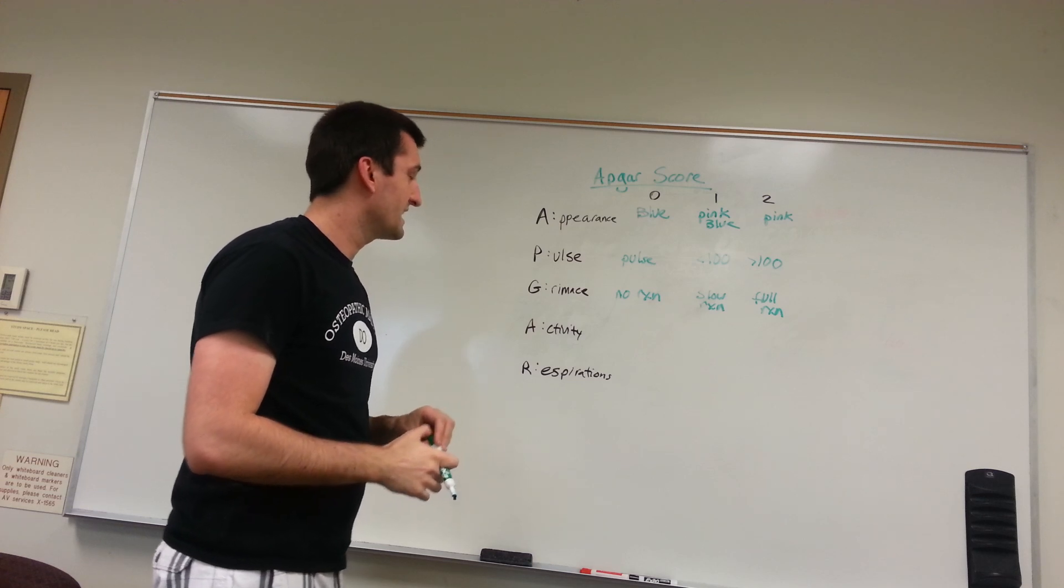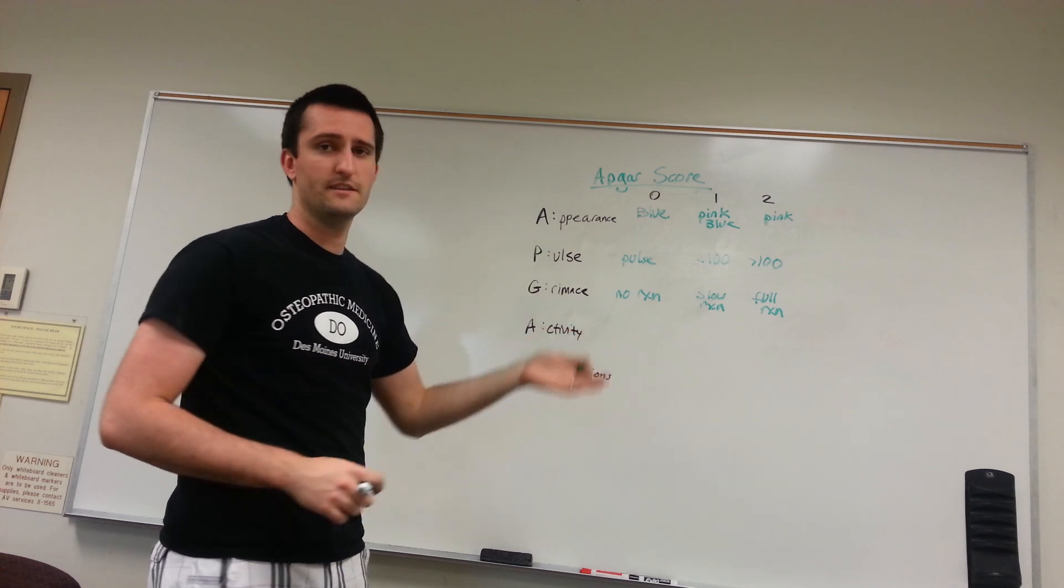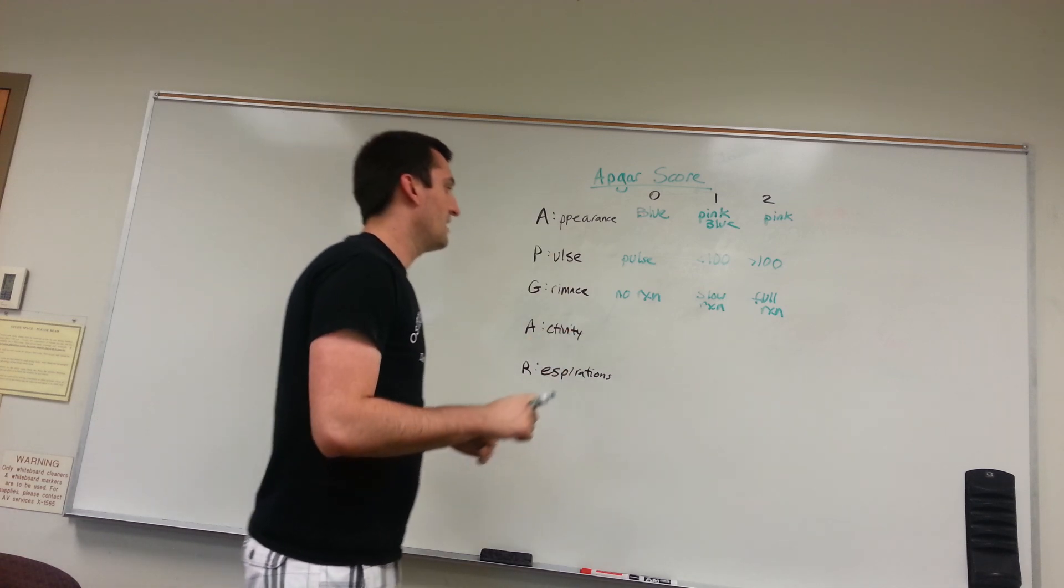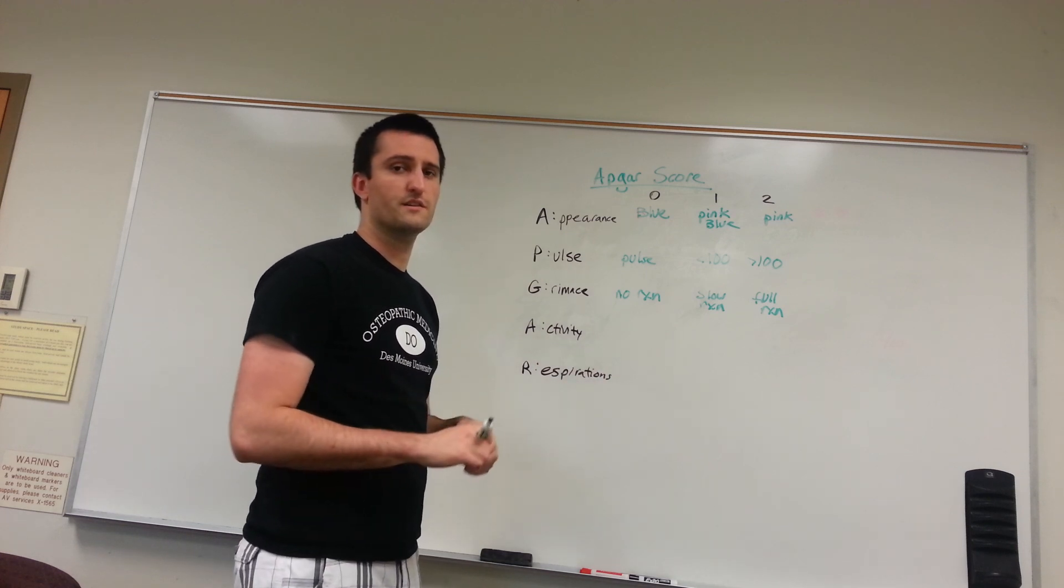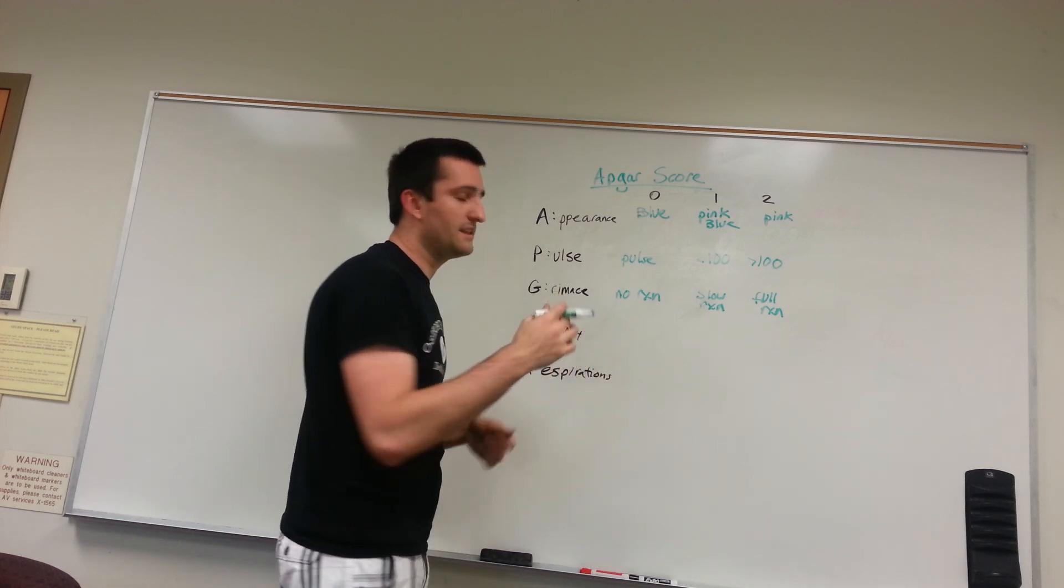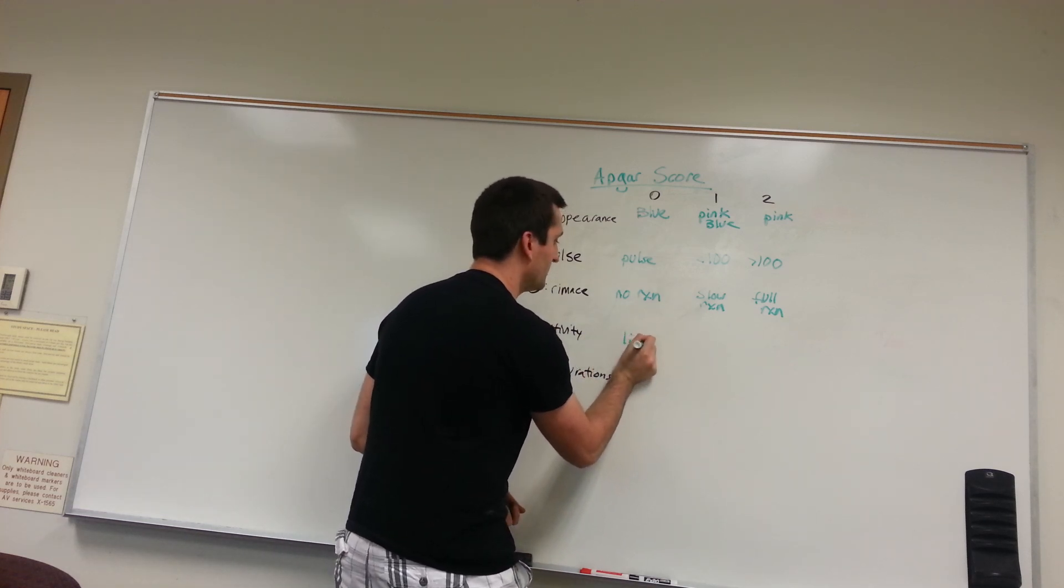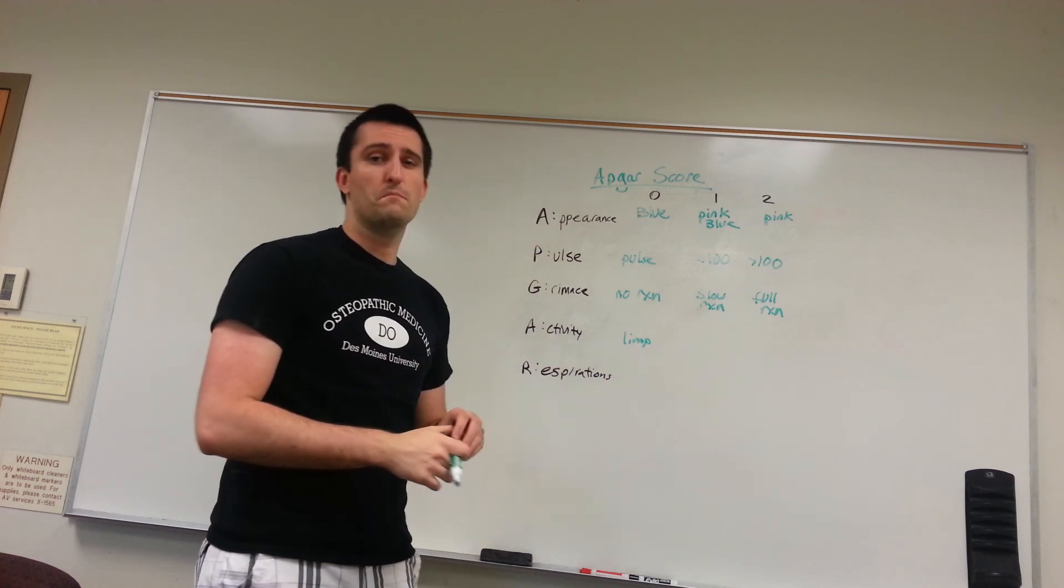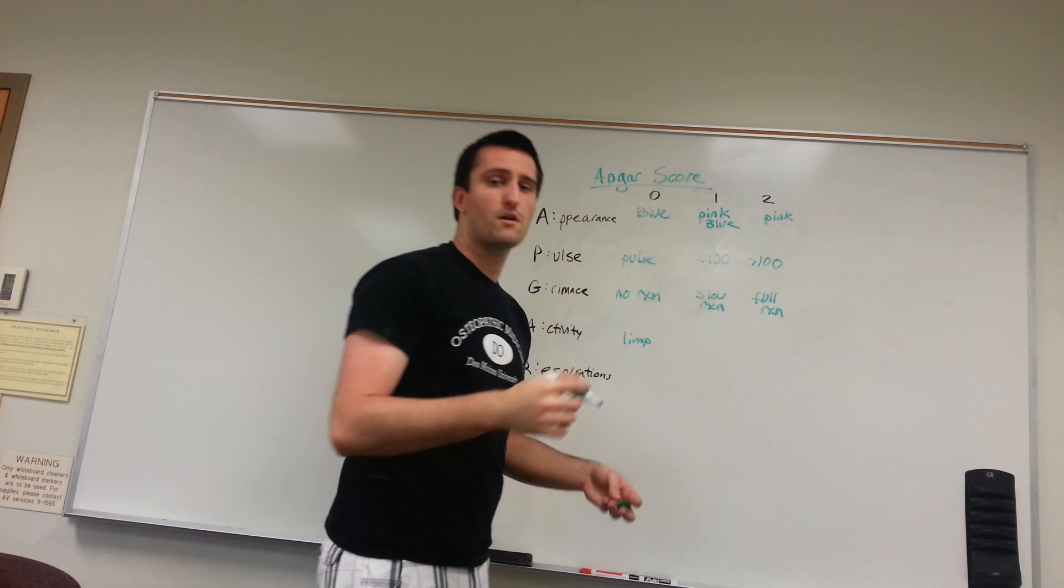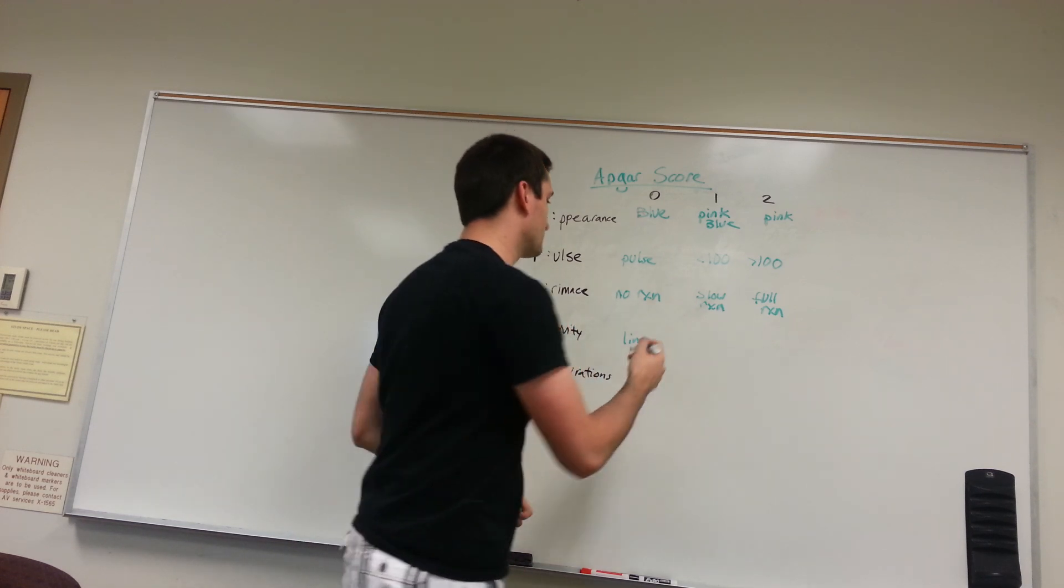Next, we've got activity. Activity is a very subjective category as well. While pulse, it's either 100 or it's not. Activity, you're going to look at their tone, their flexion and extension. If they lay there limp, they would have an activity of 0. So, I'll say that they're partially flexed. Then you would have a score of 1. If they're in partial extension and partial flexion, then you would give them a score of 1.